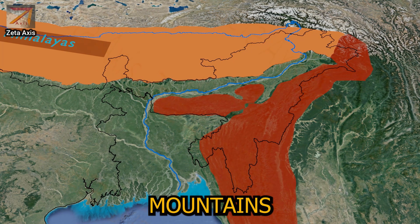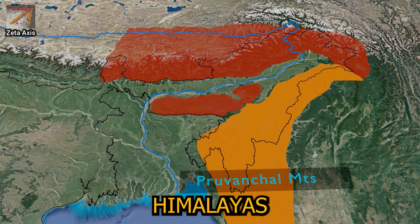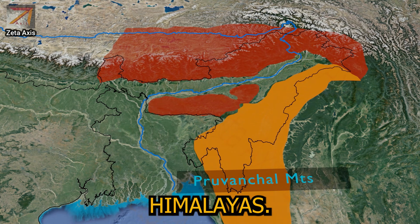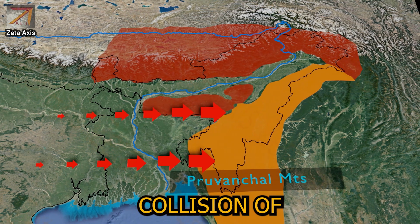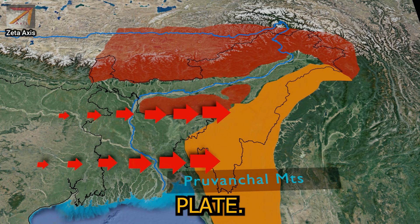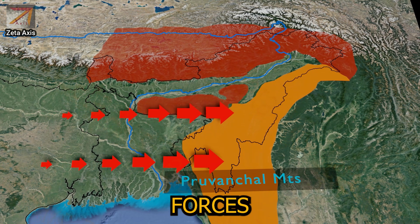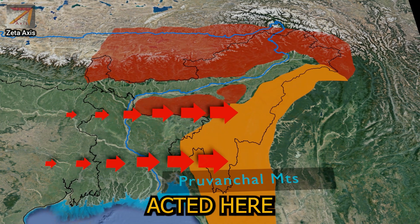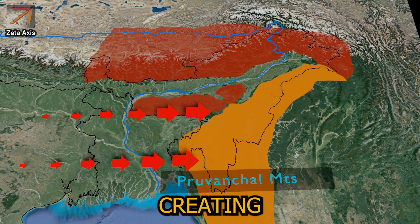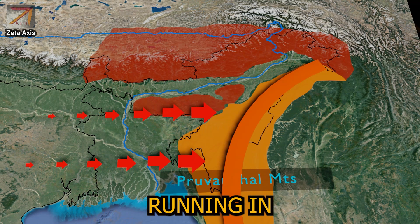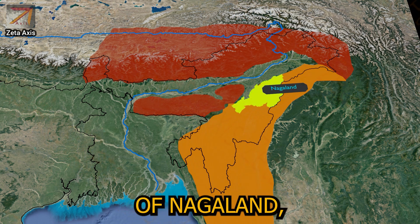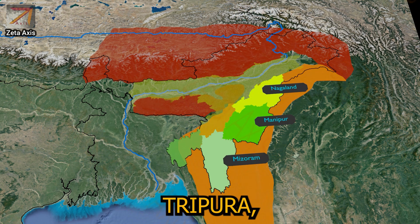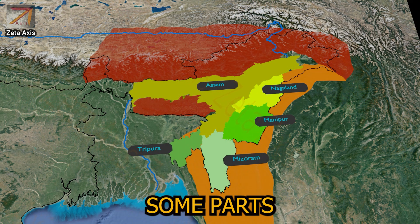The second group of mountains belongs to the Purwanchal Himalayas, or the North Eastern Himalayas. These mountains were also created during the collision of the Indian plate and Eurasian plate. However, the compressive forces of the collision acted here from the eastern direction, creating a chain of mountains running in a north-south direction. These mountains are mainly present in the states of Nagaland, Manipur, Mizoram, Tripura, and also cover some parts of Assam.